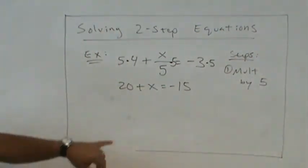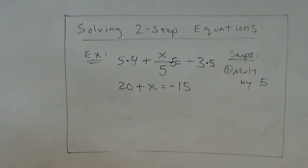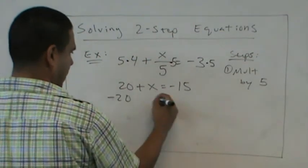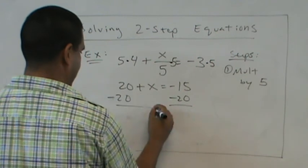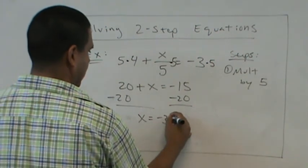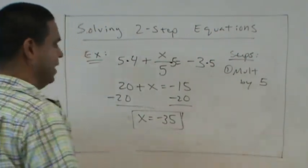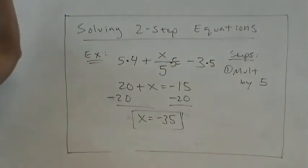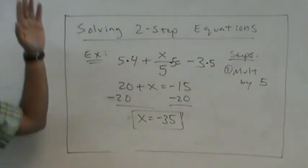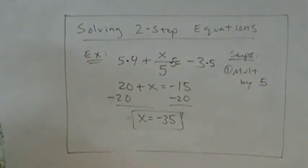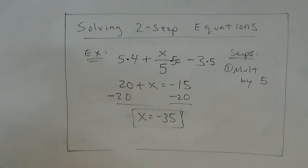And after we multiply by 5, the next thing? Subtract 20. How many got negative 35? About half of you. We'll work on those. That's it. Very good. Thanks. Bye.